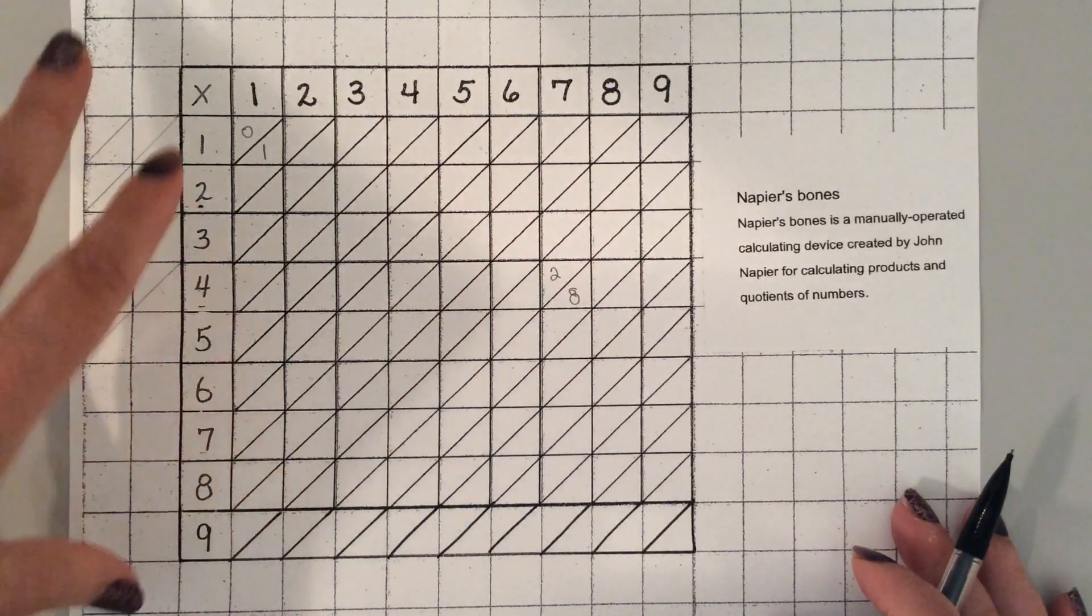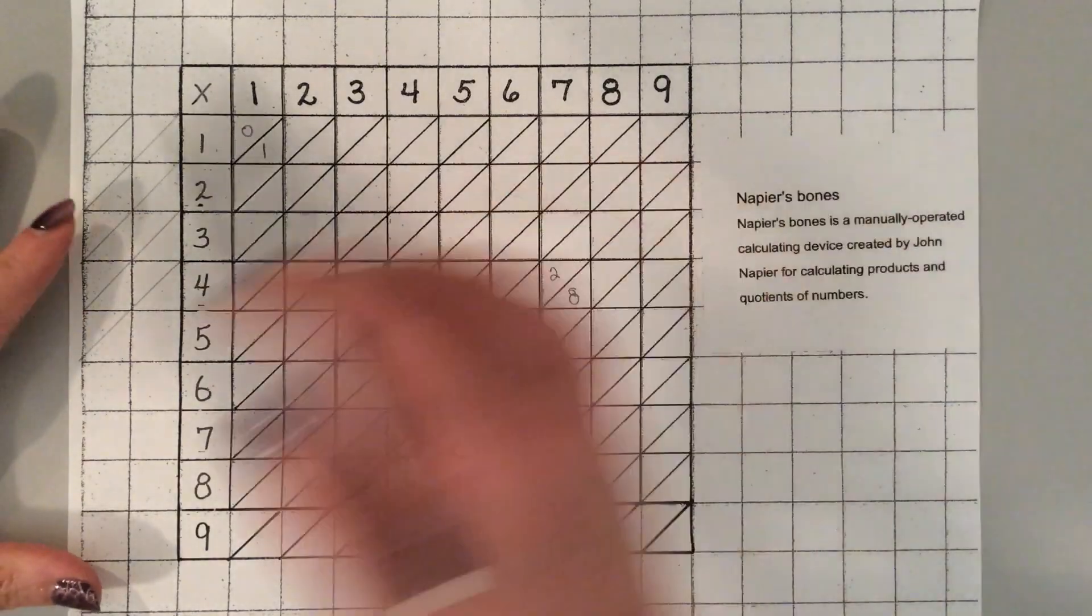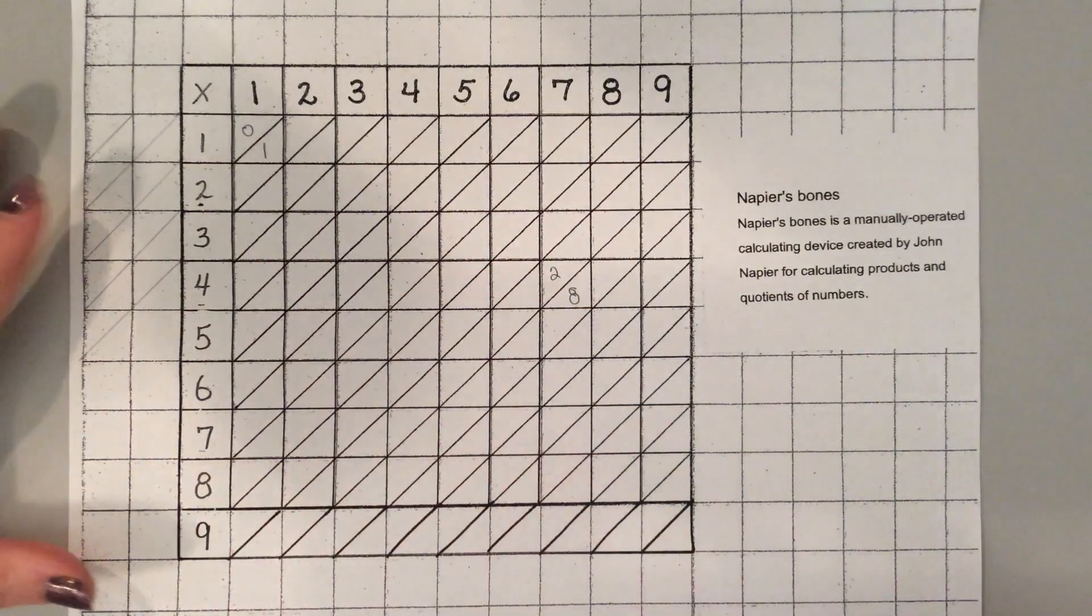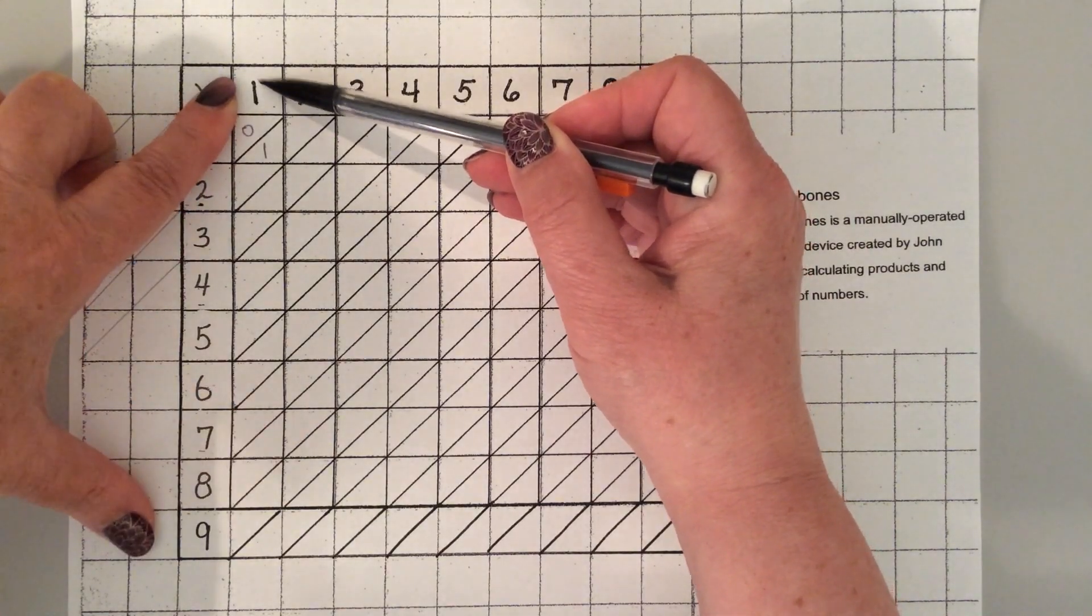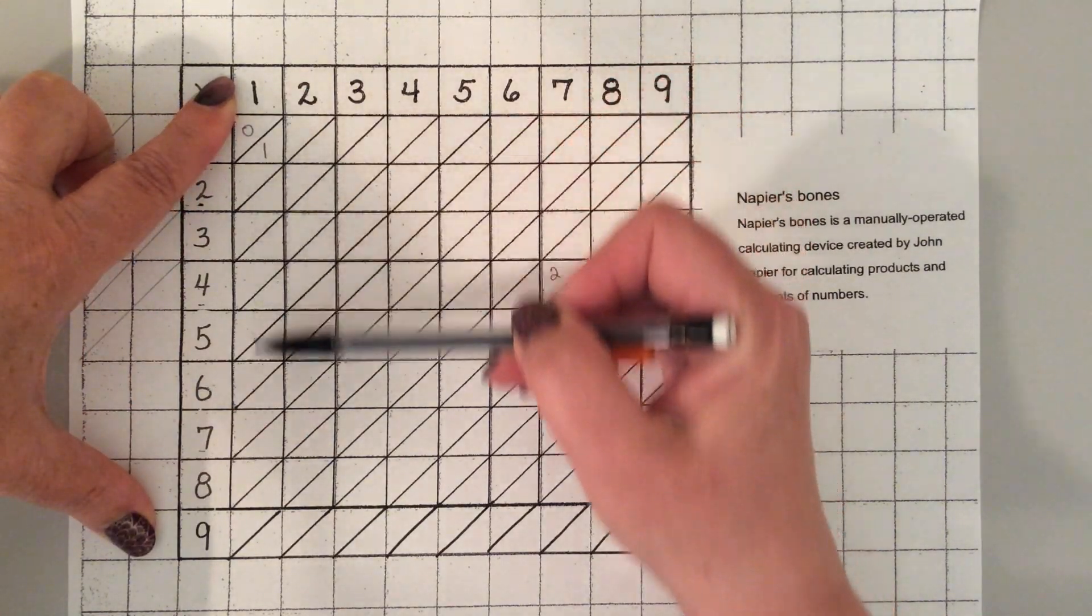It's a real simple setup. You make a grid, you need to make your bones. Each one of these is a bone. This is my one bone and it's going to have all the multiples of one down here.